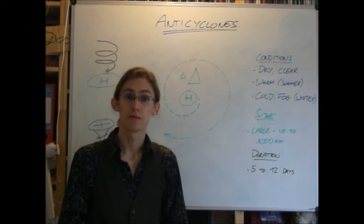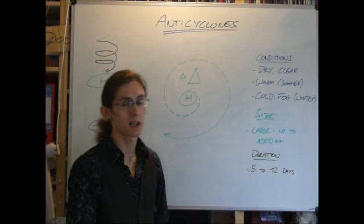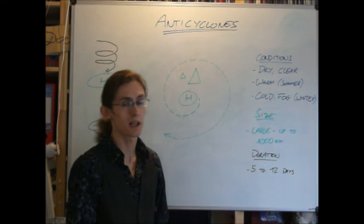So anticyclones in general are very simple, but they can lead to, because they're dry and clear, in summer, droughts and forest fires. In winter, we can get very cold snaps and freezing conditions. So, any questions, let me know. Thanks for watching.